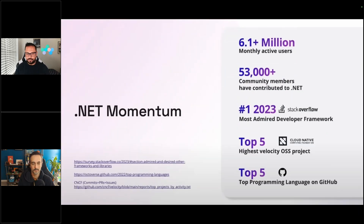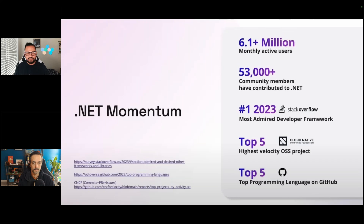Modern .NET has also been enjoying a lot of momentum and a lot of growth. Look at the number — 6.5 million developers every month. So that's a lot. It's very heavily admired, a high velocity open source project. What's not to like?